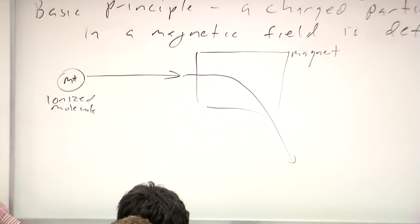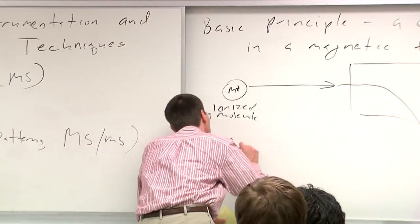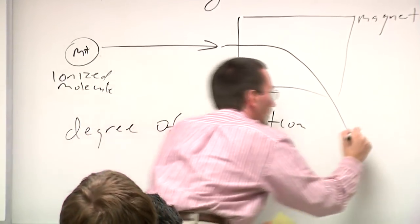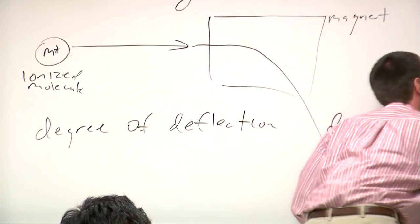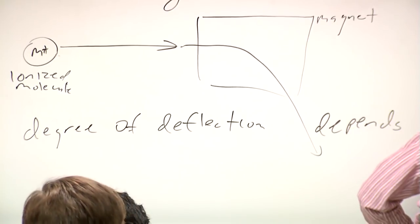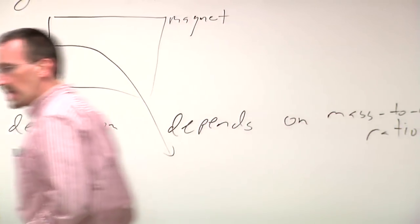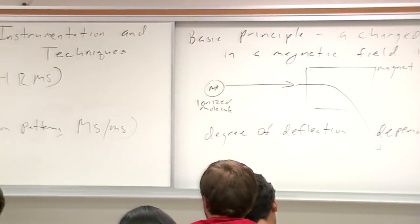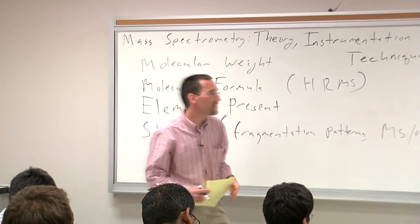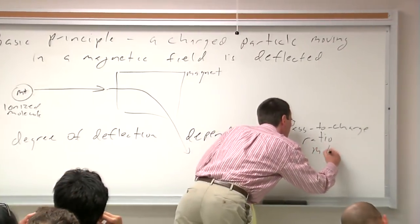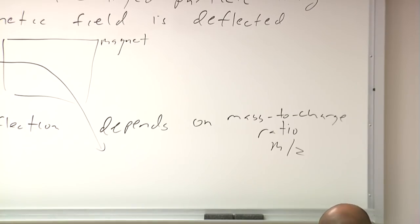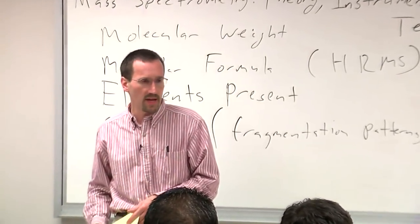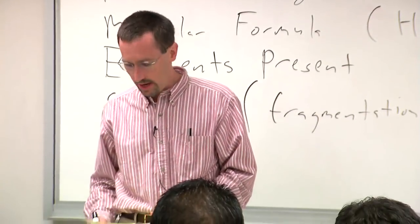The degree of deflection depends on the mass-to-charge ratio. Any given particle, whether it has 20 AMU and one charge or 40 AMU and two charges, is going to get deflected the same amount. So it's the mass-to-charge ratio you're seeing on the x-axis — not mass alone. This becomes particularly important when you're doing ESI, electrospray ionization mass spec, on reasonably big molecules where many times you get more than one charge on a molecule.